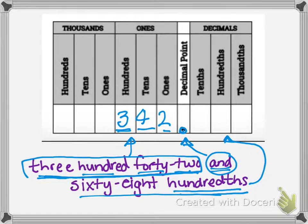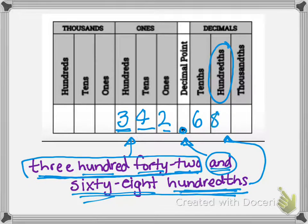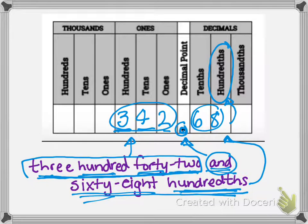We see that our last word is hundredths, so we know the last digit goes in the hundredths place — nothing in the thousandths place. We look at what we write: sixty-eight. Sixty-eight hundredths. Let's check it: three hundred forty-two and sixty-eight hundredths — three hundred forty-two and sixty-eight hundredths. We're good to go.